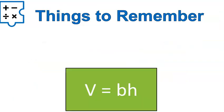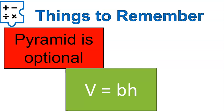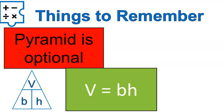A couple of things to remember: you can use the formula volume equals base times height. The pyramid is optional but a helpful tool to calculate volume, base, or height. You can certainly use the formula and rearrange it as needed according to a fact family, like we did at the beginning. I hope that video was helpful — make sure to practice using the worksheet, and good luck on your quiz. Have a wonderful day.